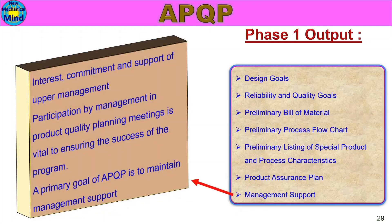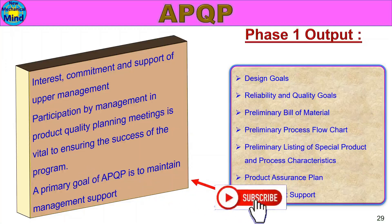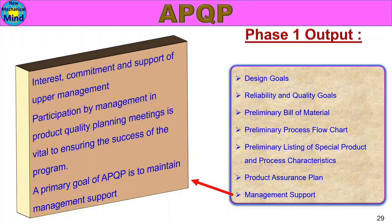Management Support: interest, commitment and support of upper management. Participation by management in product quality planning meetings is vital to ensuring the success of the program. The primary goal of APQP is to maintain management support, because management provides commitment, inputs, and ideas. In the APQP process, management support is the primary goal.